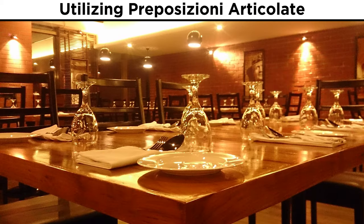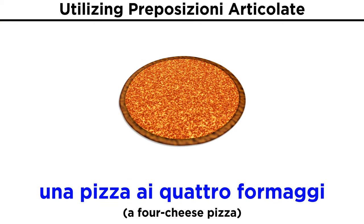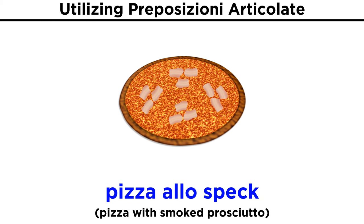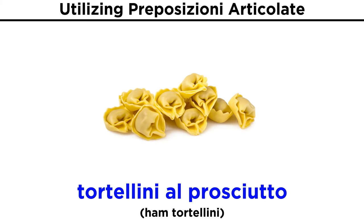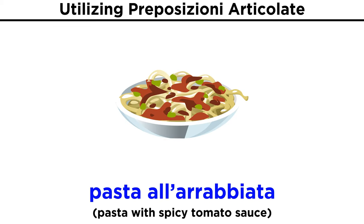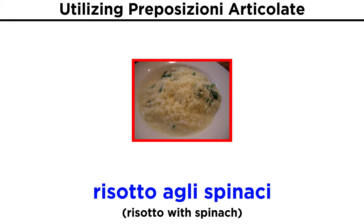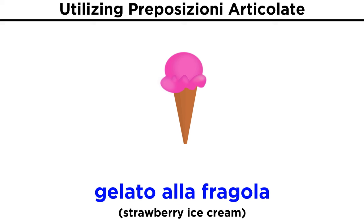Some of these prepositions may already be familiar if you like eating at Italian restaurants. You may have eaten una pizza ai quattro formaggi, pizza allo speck, tortellini al prosciutto, pasta alla rabbiata, risotto agli spinaci, gelato alla fragola. In all of these cases, the prepositions mean 'with', as they tell you what's in or on the dish.